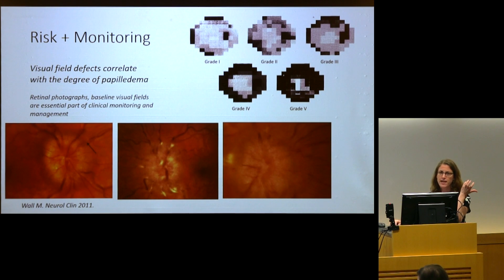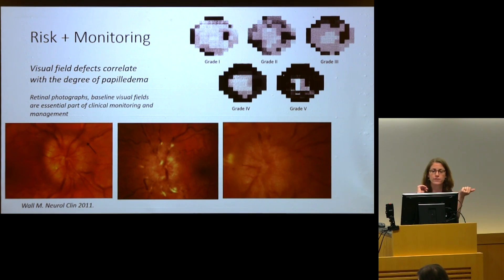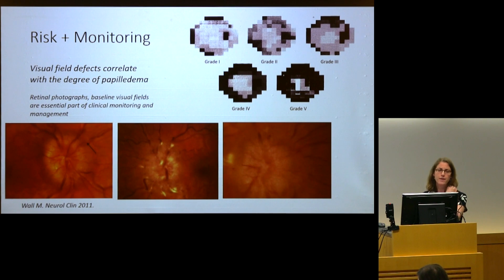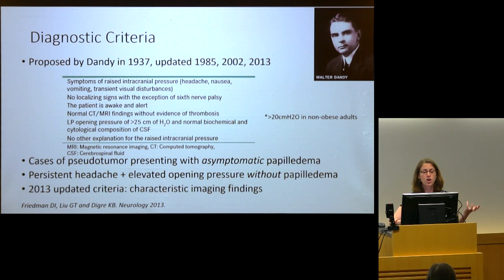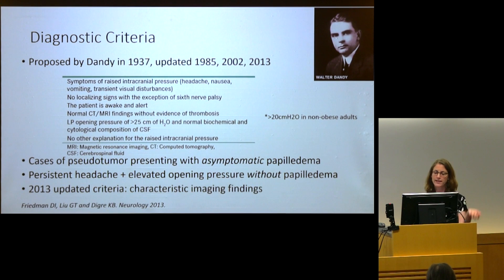How we monitor these patients has changed. We typically monitor closely with ophthalmologists doing serial eye exams, often with retinal photography and visual fields. The degree of visual loss seems to correlate with the degree of papilledema. There are diagnostic criteria — suffice to say patients can present without headache, though this is controversial. We also see patients with persistent headache, characteristic findings, elevated opening pressure, but without papilledema, and criteria have been updated over the years.